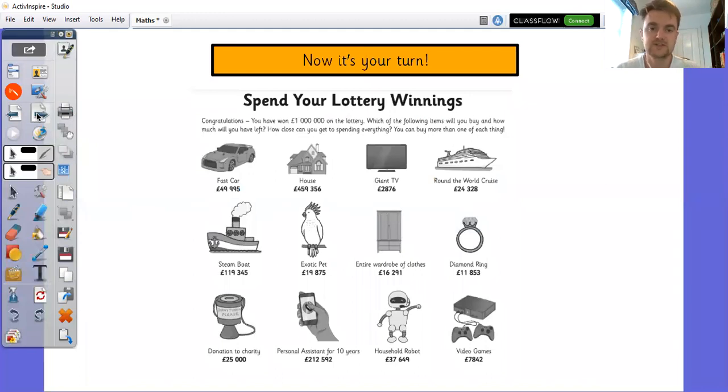And finally, we've got quite an open-ended one. So spend your lottery winnings. Congratulations, you have won £1 million on the lottery. Wouldn't that be nice? Which of the following items will you buy? And how much will you have left? How close can you get to spending everything? You can buy more than one of each thing. Now, obviously, there are lots and lots of different ways that you could do this. So that's a nice open-ended question that takes you up to larger numbers. Although, if there was a video game console that would actually cost £7,842, I doubt that so many people would be in today. I will go through onto the next two slides to show you the answers. Pause on them when you're there. If you're stuck with anything, then start with the answers and work backwards. See if that helps you. And if you're still stuck, then please feel free to email me and answer some questions.